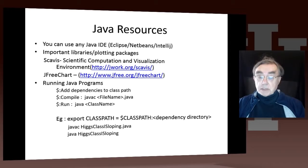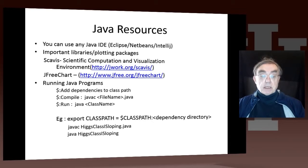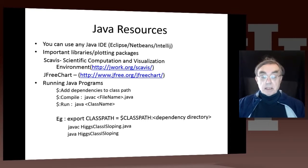To run Java programs, you can do it on your local machine using classical methods. The Java code is available through the files tab on the class web page. You set up your class path, compile it, and then run it. Here's an example for the file available for this particular unit, which is higgs-class1-sloping.java — you just compile it and then run it.